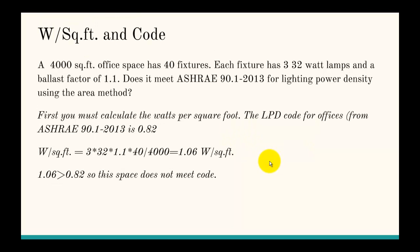Let's talk about another example. In this case we have a 4,000 square foot office space with 40 fixtures. Each fixture has three 32-watt lamps and a ballast factor of 1.1. Does it meet ASHRAE 90.1 code for lighting power density using the area method?